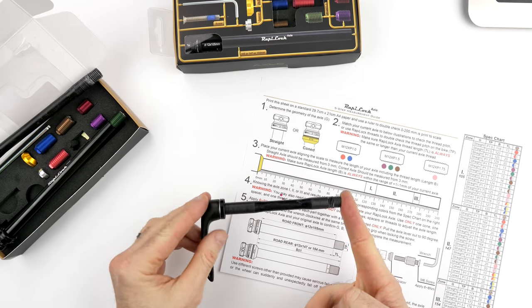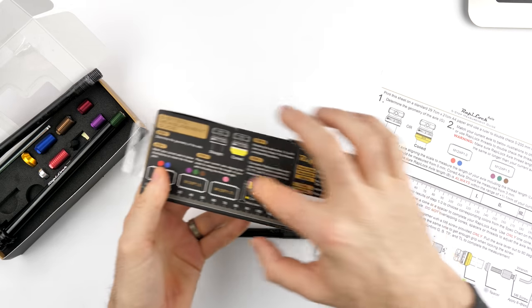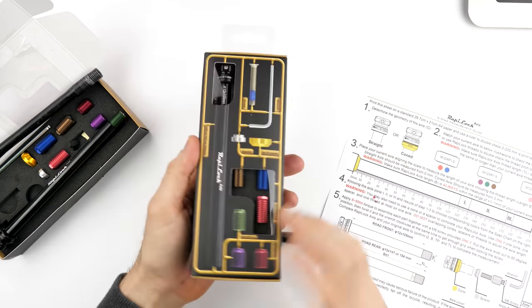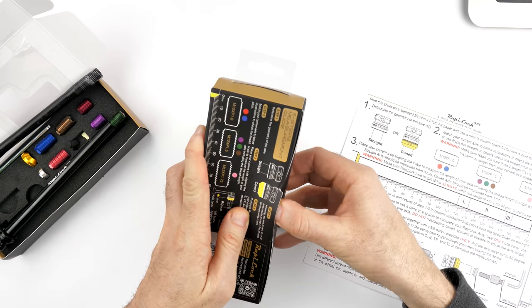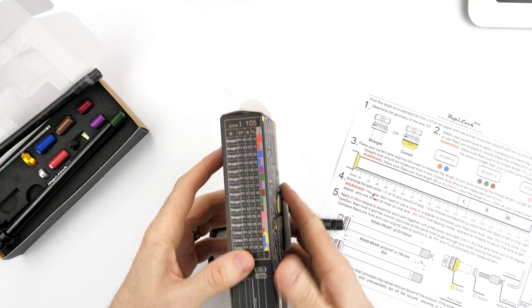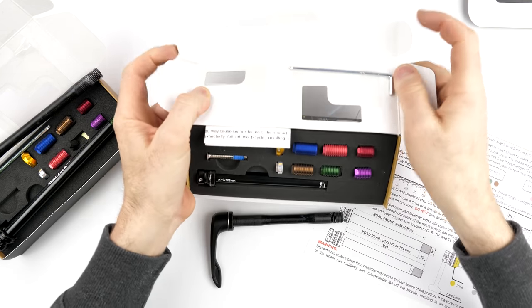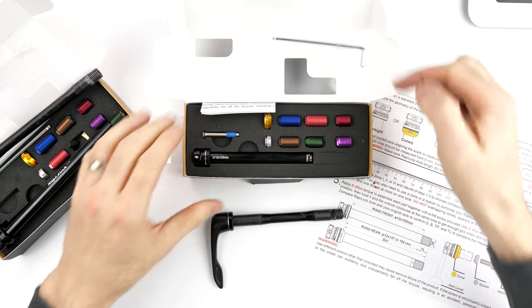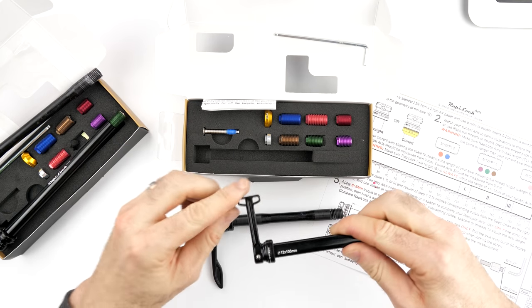Now into replacing my front through axle. Unbox this. Oh, the box has all the dimensions and information on there, so if you go pick one of these up in the store and you had your through axle with you, you could pick out exactly the one you needed very quickly. Okay, so exactly the same setup as before, even with the tool included. But this one's a little shorter because it's for the front of the bike.